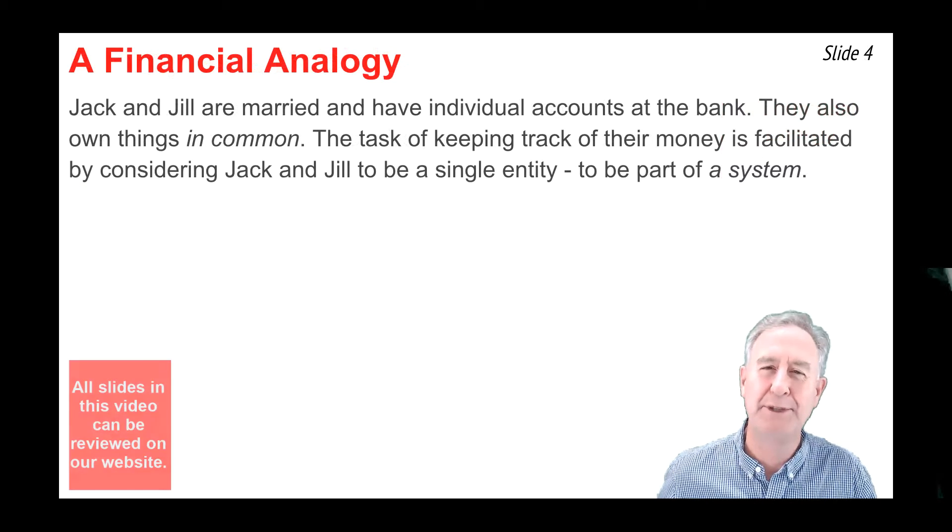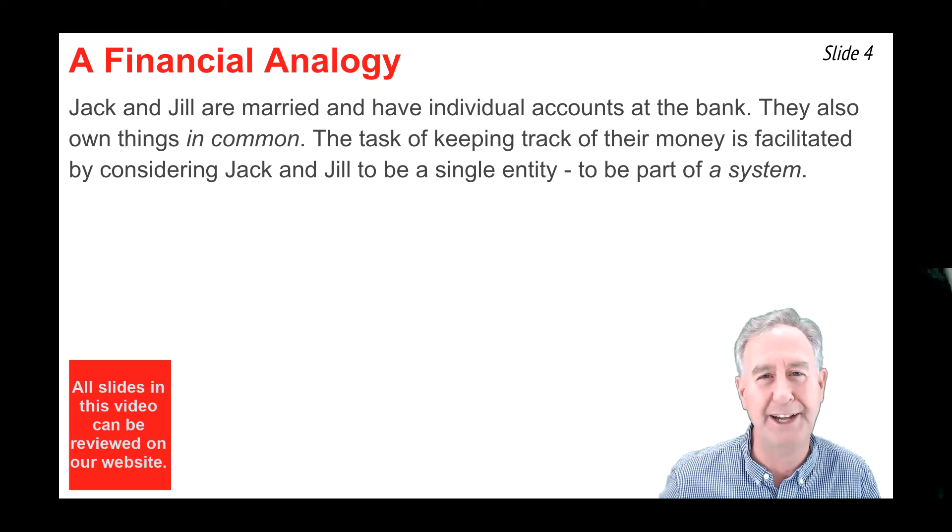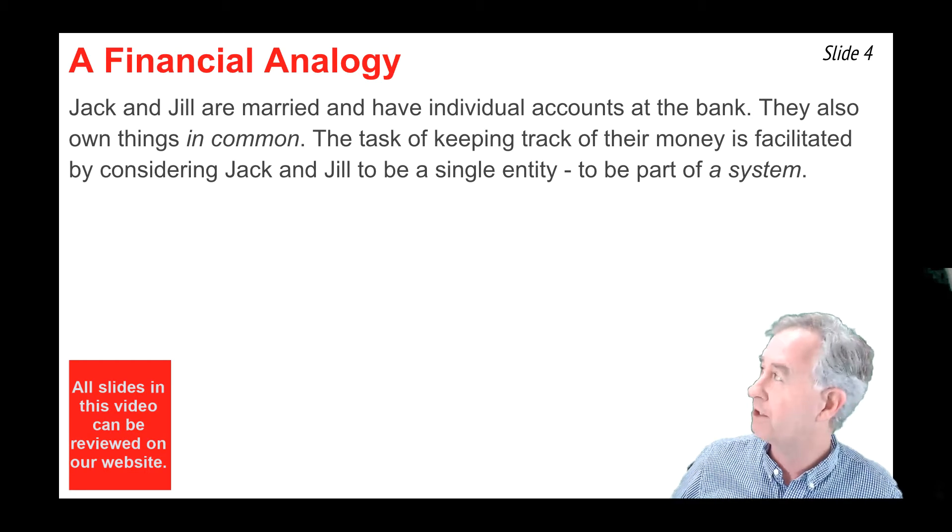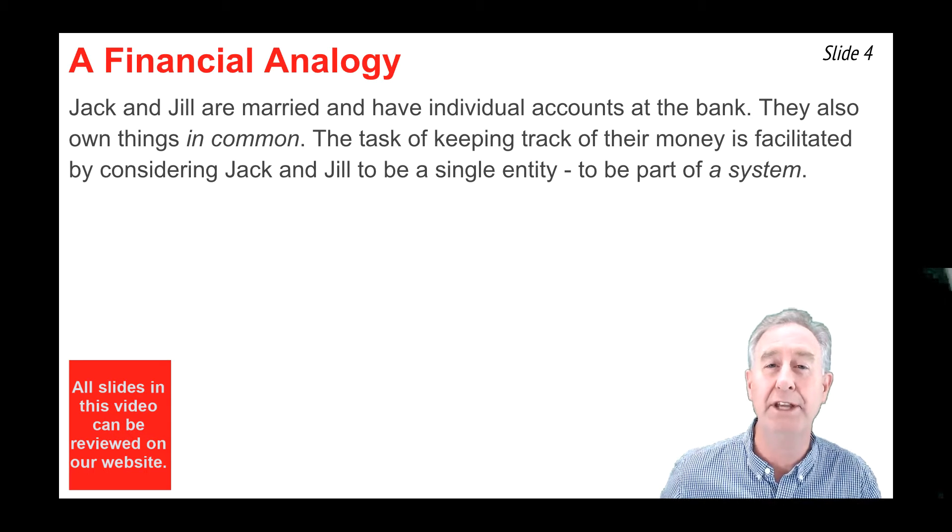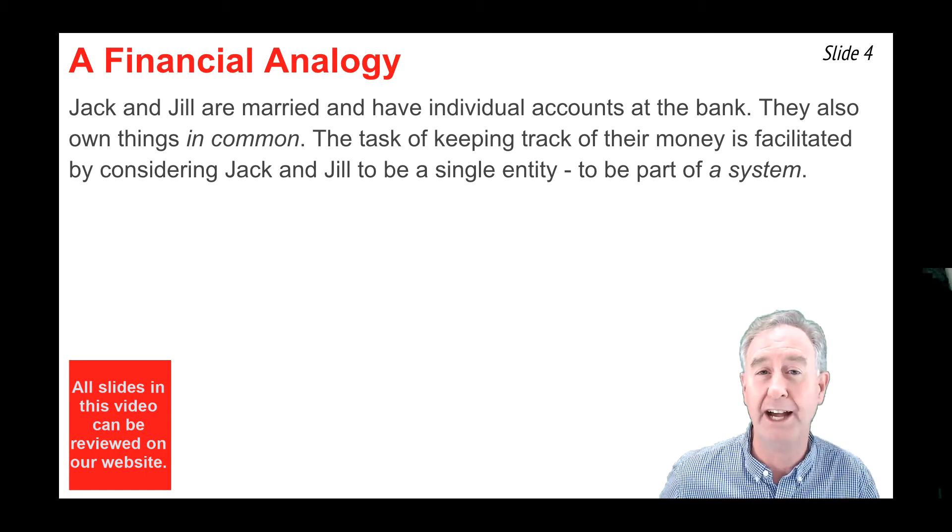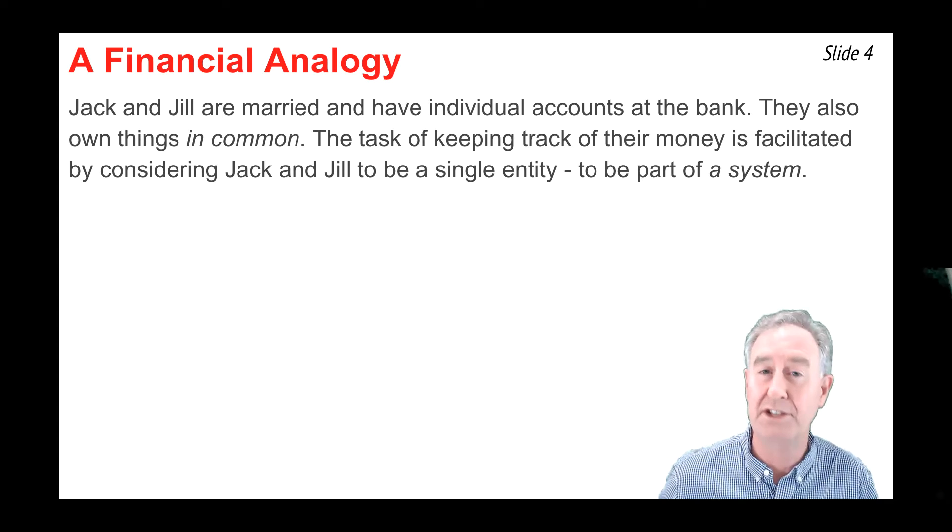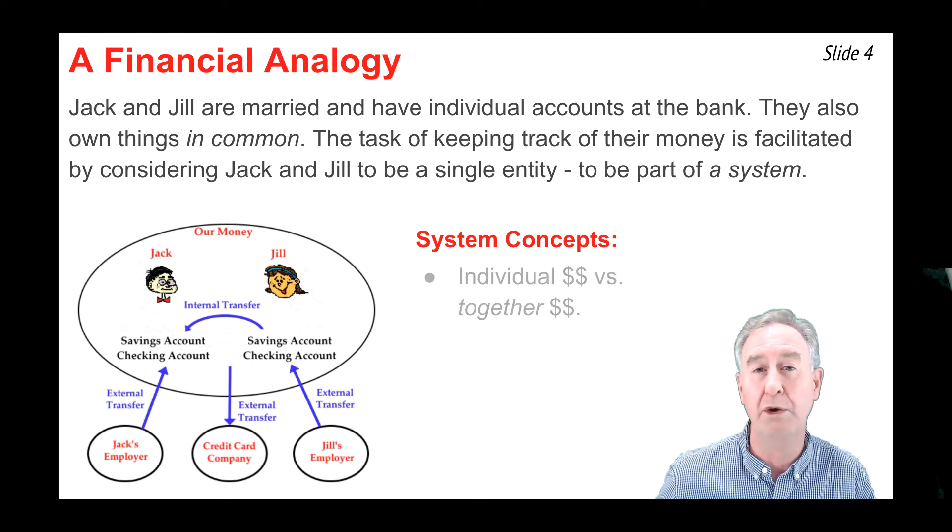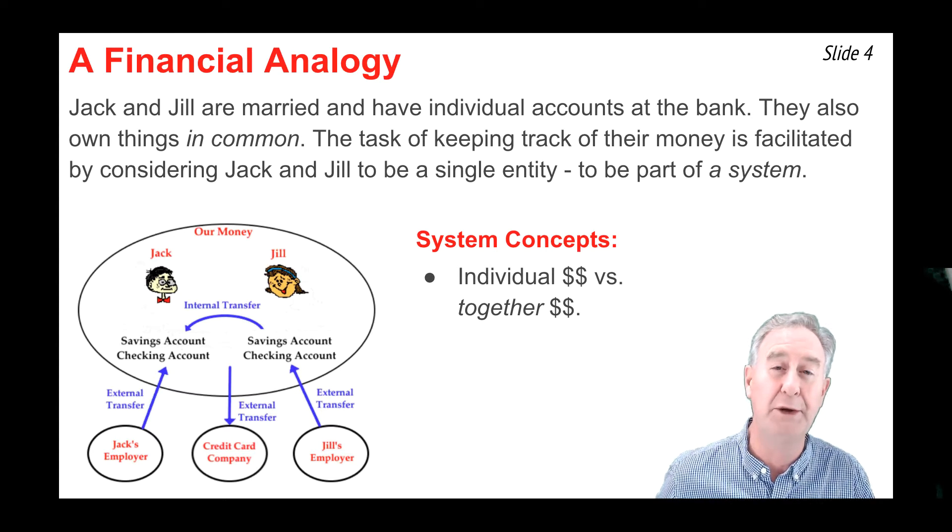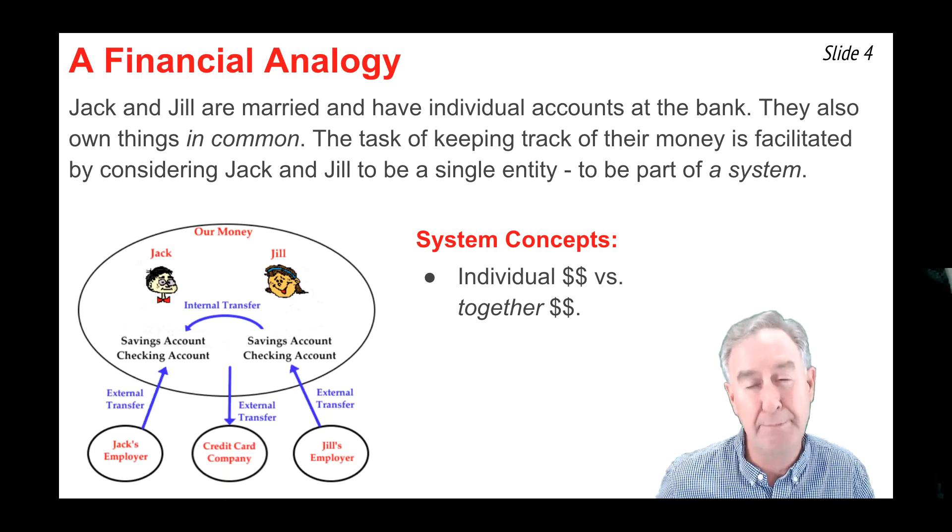When an accountant attempts to keep track of a client's money, it's important that that accountant precisely define who the client is. For instance, consider Jack and Jill who are married and each has their individual accounts at a bank, but they also own some things in common, like a house and a couple of cars. When thinking about Jack and Jill's money, it's important to think of them as a single entity, as a system. In such a case when they're considered a system, the individual money owned by Jack and the individual money owned by Jill is actually their together money. It's part of the system, the combined money.